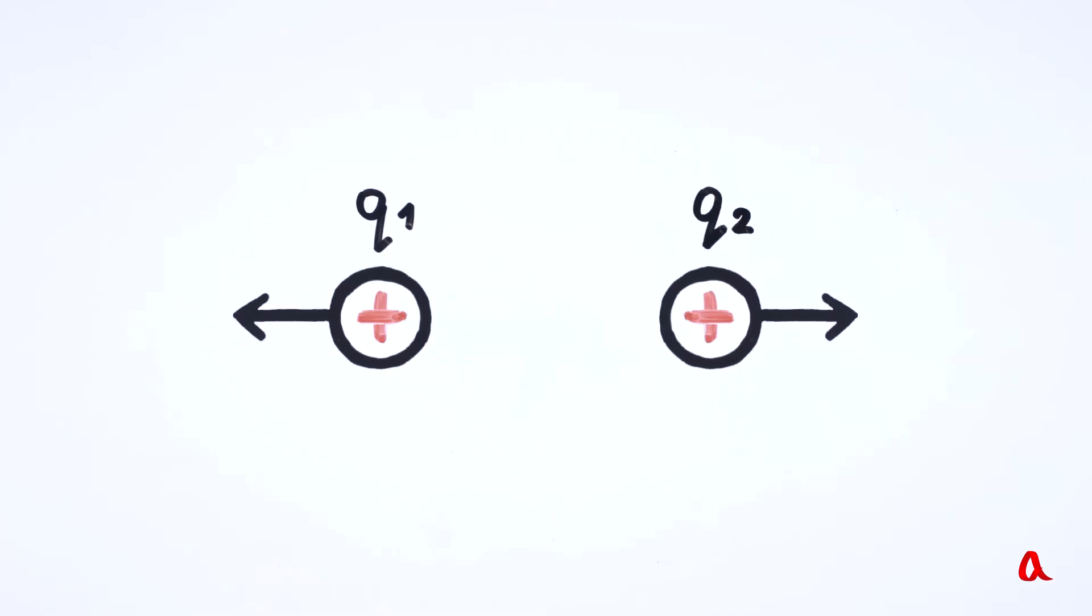Thus, Coulomb's law can be formulated as the force of interaction between two point charges is directly proportional to the product of the magnitudes of both charges, and inversely proportional to the square of the distance between them.